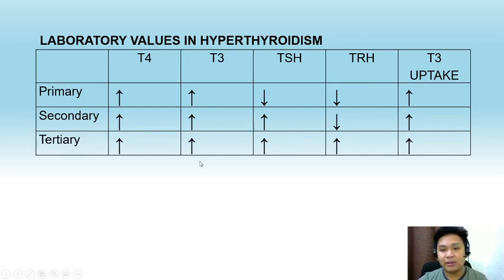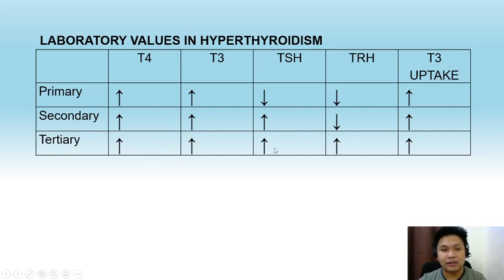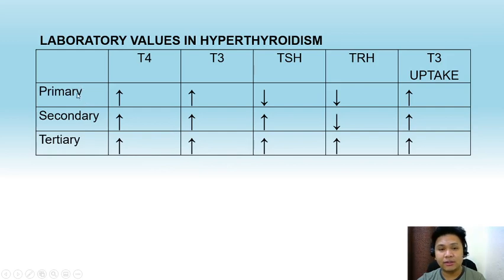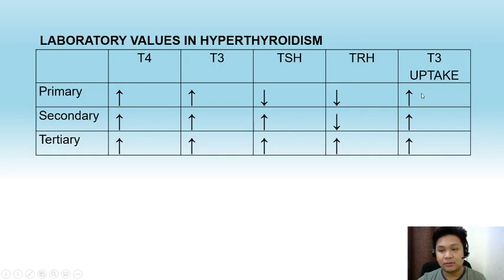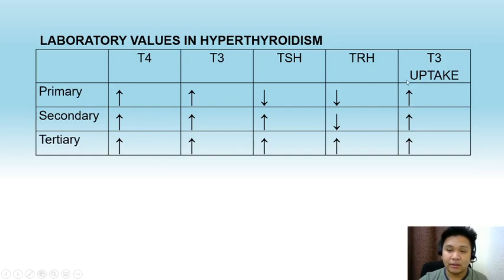In tertiary hyperthyroidism, TRH is increased, thus TSH is increased, and T3 and T4 are increased. By looking at the entire thyroid profile, we are able to differentiate between the various types of hyperthyroidism. T3 uptake is directly proportional to T4 and T3, so since T4 and T3 are increased in all types of hyperthyroidism, we also expect T3 uptake to be increased in all types of hyperthyroidism.